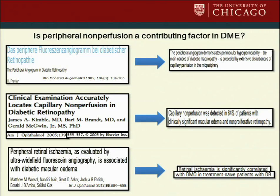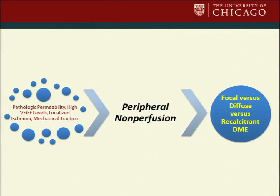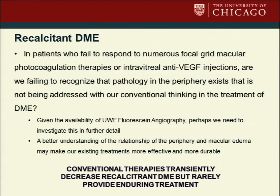There's a wealth of literature showing that peripheral non-perfusion is a contributing factor in diabetic macular edema. These patients do have peripheral non-perfusion and capillary dropout affecting diabetic macular edema. We hypothesize that the traditionally known variables that cause DME — such as pathologic permeability, high VEGF levels, localized ischemia, and even mechanical traction — are all modulated by varying degrees of peripheral non-perfusion. This causes the clinical appearance of focal versus diffuse diabetic macular edema, and even recalcitrant diabetic macular edema. In patients who fail to respond to numerous focal grid lasers and intravitreal anti-VEGF injections, we may be failing to recognize that the peripheral pathology is not being addressed with our conventional treatment thinking.